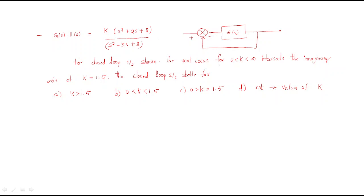The root locus intersects the imaginary axis at k equal to 1.5 — that is, the gain value at that point is 1.5. Determine whether the closed loop system is stable for k greater than 1.5, for 0 < k < 1.5, or for k greater than 1.5 (not positive values of k).